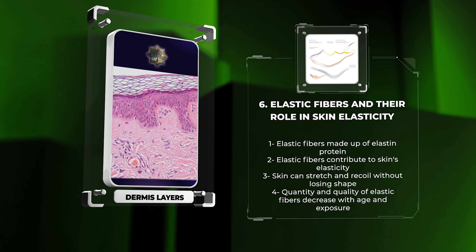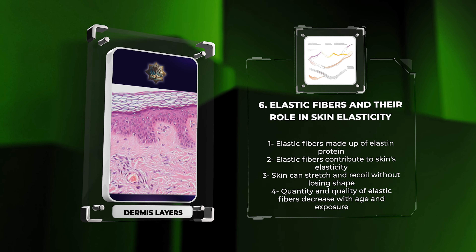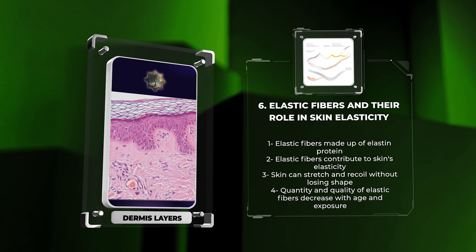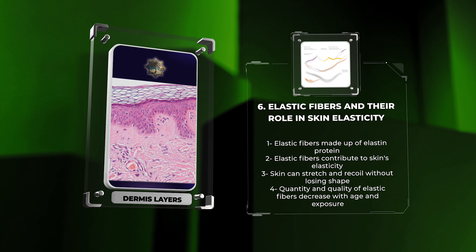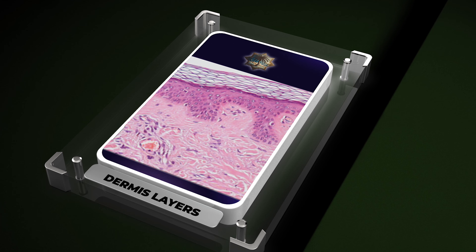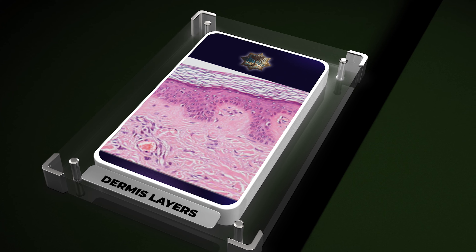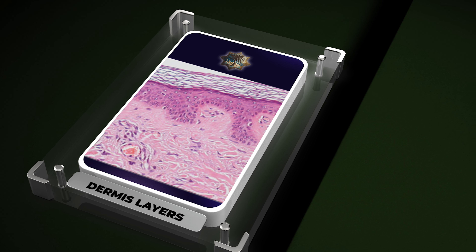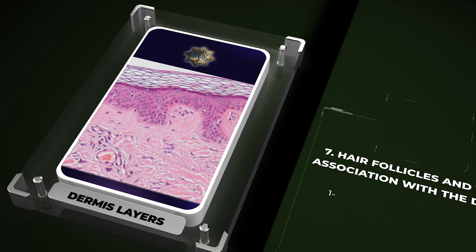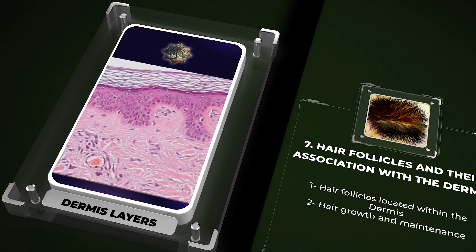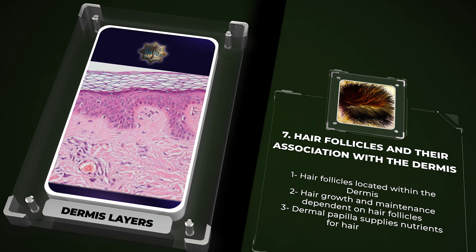With age and exposure to external factors, the quantity and quality of elastic fibers decrease, leading to a reduction in skin elasticity and the formation of wrinkles. Hair follicles reside within the dermis and play a crucial role in hair growth and maintenance. Each hair follicle is composed of epithelial and dermal components.